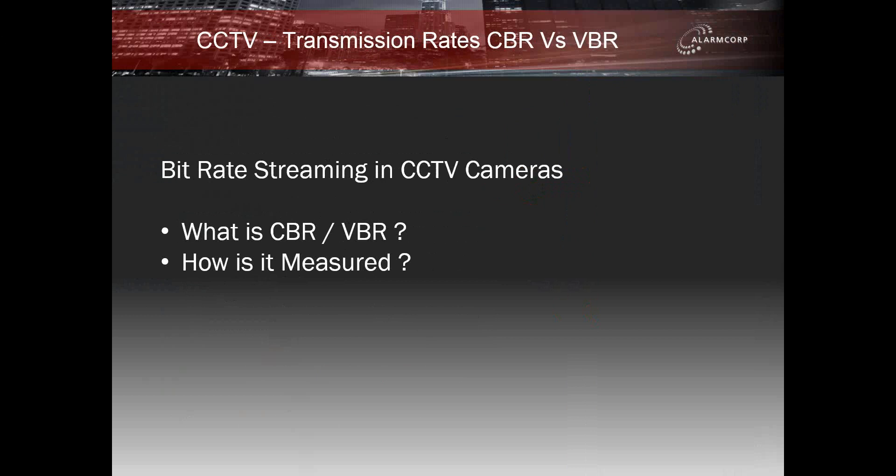Bitrates are referred to as kilobits per second or megabits per second depending on what type of camera is connected to the system, whether a 720p HD model or a 1080p full HD running at 1920 by 1080. Each situation is different but typically a 720p camera will be best set at around 1.5 to 2 megabits per second, and a 1080p camera at 3 to 4 megabits per second.